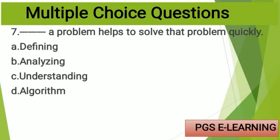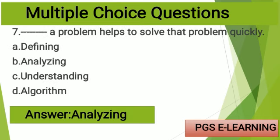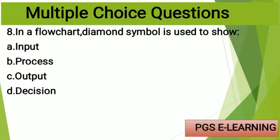MCQ number seven: blank of problem helps to solve that problem quickly. Option A: defining, Option B: analyzing, Option C: understanding, Option D: algorithm. The correct answer is analyzing.